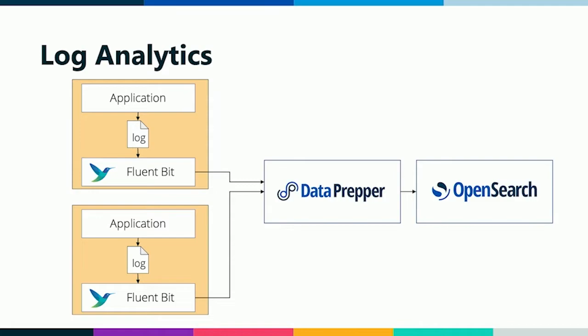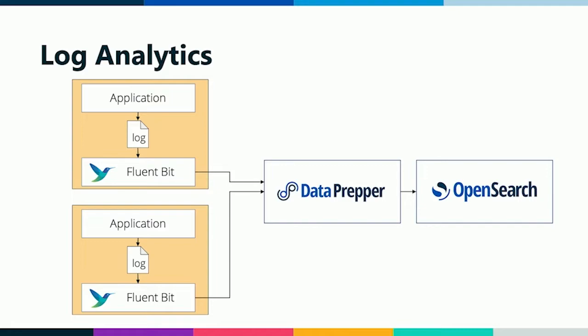If you want to use Data Prepper for logs, here's the application architecture we recommend. It's very similar to traces — Data Prepper sits right in front of your OpenSearch cluster. Instead of using the OpenTelemetry collector here, we're using FluentBit. We checked in with some users of OpenSearch and found that a lot of them are already using FluentBit, so we thought, well, let's work with that. Your applications are almost certainly generating logs already; you've just got to get them off, and that is where FluentBit comes in. You run FluentBit as a sidecar and configure it to load your log files and send those to Data Prepper.